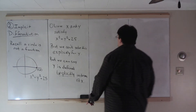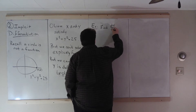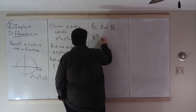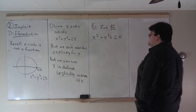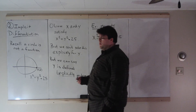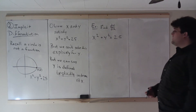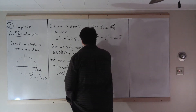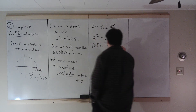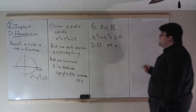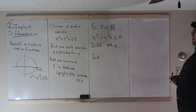When we have an equation with x's and y's where we can't solve for y, we can still take the derivative by using a chain rule observation. So let's look at this example: find dy/dx for this curve. This example illustrates how we can take the derivative of something where y is defined implicitly in terms of x — this process is called implicit differentiation. What we can do is differentiate this equation with respect to x.